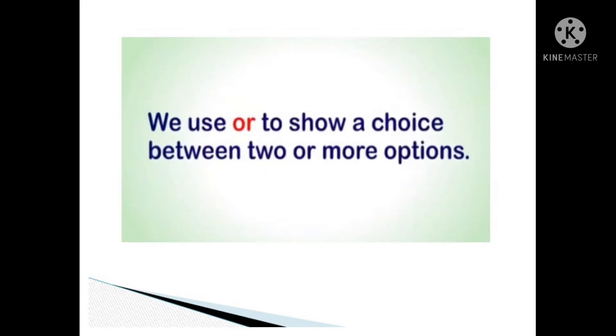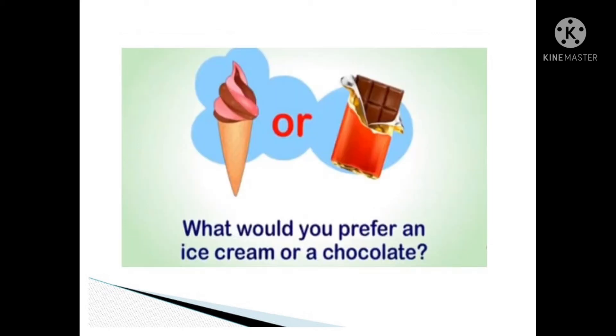We use or to show a choice between two or more options. For example, what would you prefer? An ice cream or a chocolate?